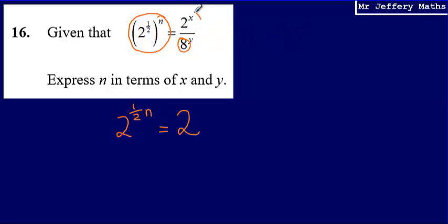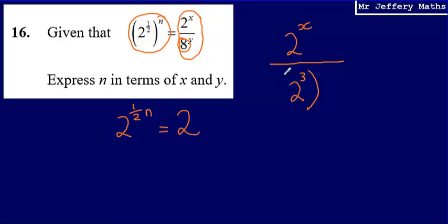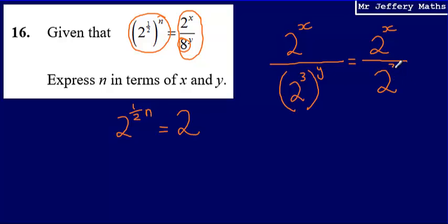So I can rewrite this whole thing as 2 to the power of x divided by — writing that base of 8 as a power of 2 — 8 is the same as 2 cubed. So I am raising 2 cubed to the power of y. Simplifying this the same way as before, multiplying the two powers, I can say that is 2 to the power of 3y.